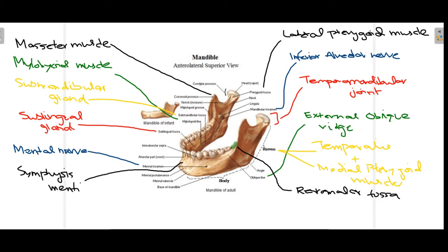Moving on towards detailed anatomy of the mandible — this particular view is the anterolateral superior view, viewing the mandible from anteriorly, laterally, and slightly superiorly. The condylar process articulates with the base of the skull to form the temporomandibular joint. We can see the condyles bilaterally, both articulating with the base of the skull to form the temporomandibular joint.